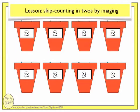Our first skip counting sequence that I will ask you to image is the pattern for 2. Here we have some flower pots that have flowers growing in them. I would like you to see a picture in your head about the groups of flowers that will grow out of each pot as we skip count in groups of 2. The label on the pot will give you a clue.